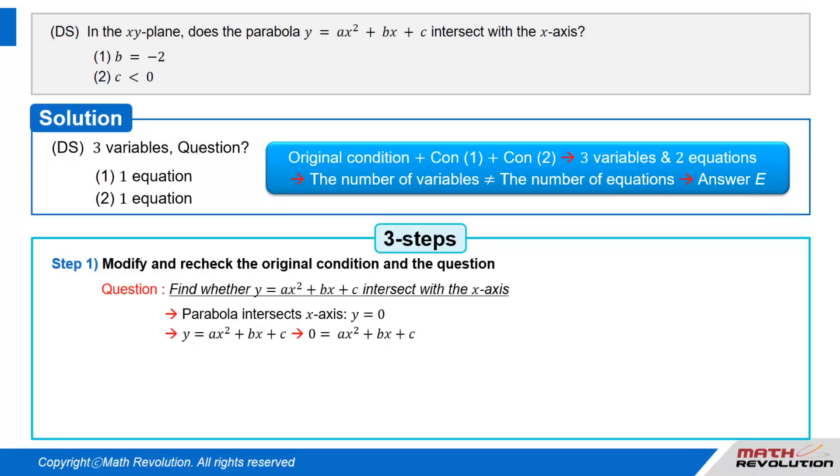Let's apply the three steps suggested previously. Follow the first step of the variable approach by modifying and rechecking the original condition and the question. You should always use the same method. That's the beauty of the variable approach. We have to find out whether parabola y equals a times x squared plus b times x plus c intersects with the x-axis on the xy plane. When the parabola intersects the x-axis, y will be zero and we can modify the equation as a times x squared plus b times x plus c equals zero, which is a quadratic equation.